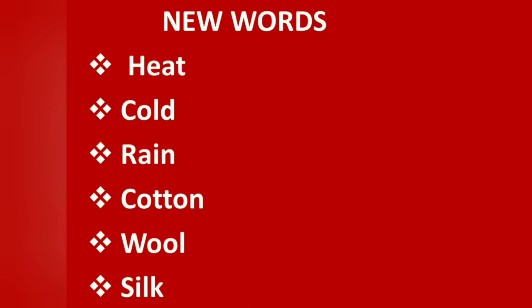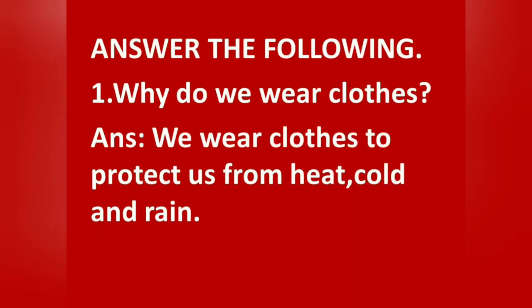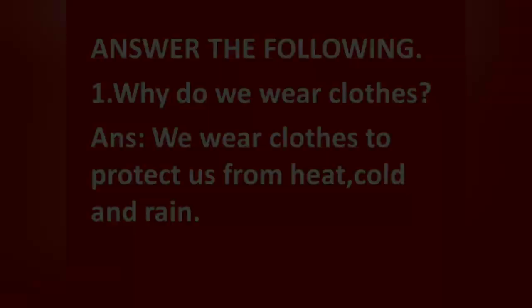Silk: S-I-L-K. Fill in the blanks. First: we get wool from dash. Answer: sheep. Second: we get silk from dash. Answer: silkworm. Answer the following. First: why do we wear clothes? Answer: we wear clothes to protect us from heat, cold and rain.